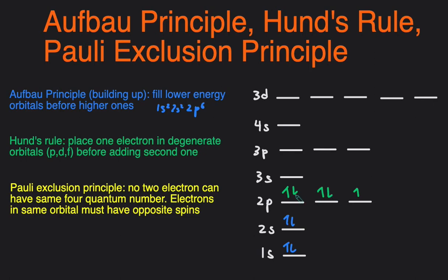So a violation of Hund's Rule would have been if we went 1, 2, 1, 2. So you have to put one in each before you put the second, and that is what Hund's Rule states.